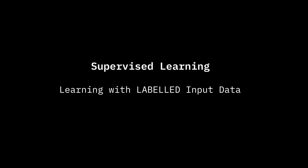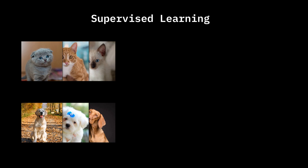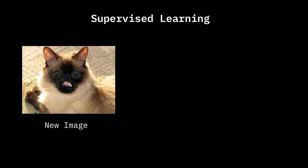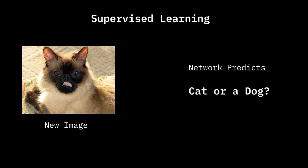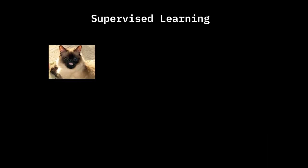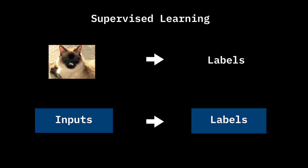Most of us by now should be familiar with supervised learning, since it is the most ubiquitous form of deep learning in the past few years. Essentially, supervised learning is when you use a labeled dataset to train a network. You have images of cats and dogs, the dataset also has labels — this image is a cat, this image is a dog — and the network is trained to predict, given an image, is it a cat or a dog. The network learns to map input images into labels, or more generally, inputs into labels.